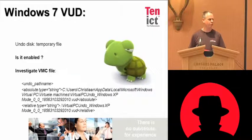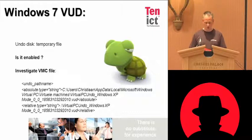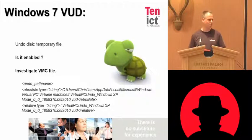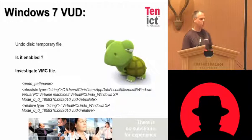So how do you know if VHD has been used? It's enabled, and you have to investigate the VMC file. You will see that there's some code there: 1-8-5-6-3-1-0-3-3-9-9. I've noticed that 2010 is the year, but the rest of the code I simply don't know what it actually means. It has something to do with the date and time, but I've asked Microsoft about it — because every time you generate a VHD file, it gives you this kind of code, but I can't explain it yet.